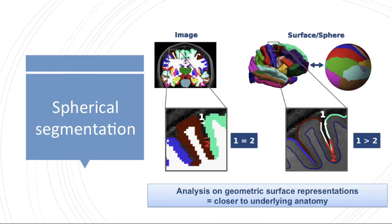As you may know, human cortical neuroimaging signals such as cortical neuroanatomical regions or thickness are typically associated with the cortical surface. Processing and analyzing these signals on geometric surface representations rather than in a regular voxel grid has the advantage of staying true to the underlying anatomy.